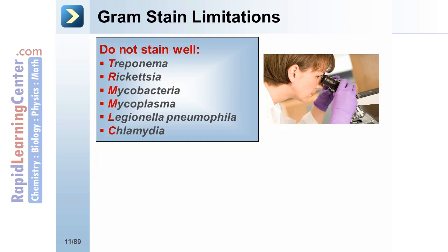The gram stain is used to differentiate between gram-positive and gram-negative bacteria. Gram-positive cells have a thick peptidoglycan wall that stains purple, while gram-negative cells have a thinner peptidoglycan layer that stains pink. However, some bugs just do not stain well.